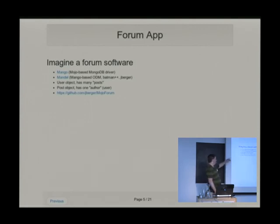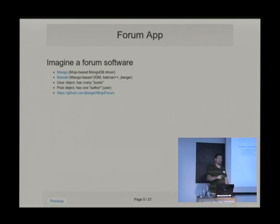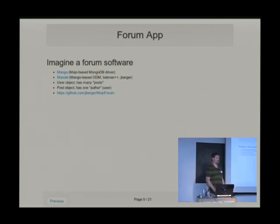Let's talk about two classes. We have user objects, which represent the user, and a post object. When you make a new comment to a thread, you make a new object that gets stored in a collection of posts. This code is also available at Mojo Forum — it's really a toy example so far, so please don't put it into production. It's kind of ugly.